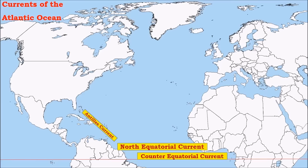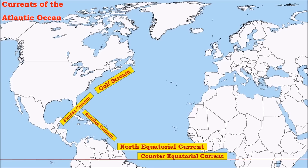Now let us move on to currents of the Atlantic Ocean. Like in the Pacific, we have the North Equatorial, Counter Equatorial, and South Equatorial Currents. The North Equatorial Current splits into the Antilles Current, which flows east of the West Indies, and another branch towards the Gulf of Mexico. Water from the Mississippi River raises levels in the Gulf of Mexico, so it flows out towards Cape Hatteras as the Florida Current — a warm current. This mixes with the Antilles Current to form the Gulf Stream, which flows from Cape Hatteras towards the Grand Banks.